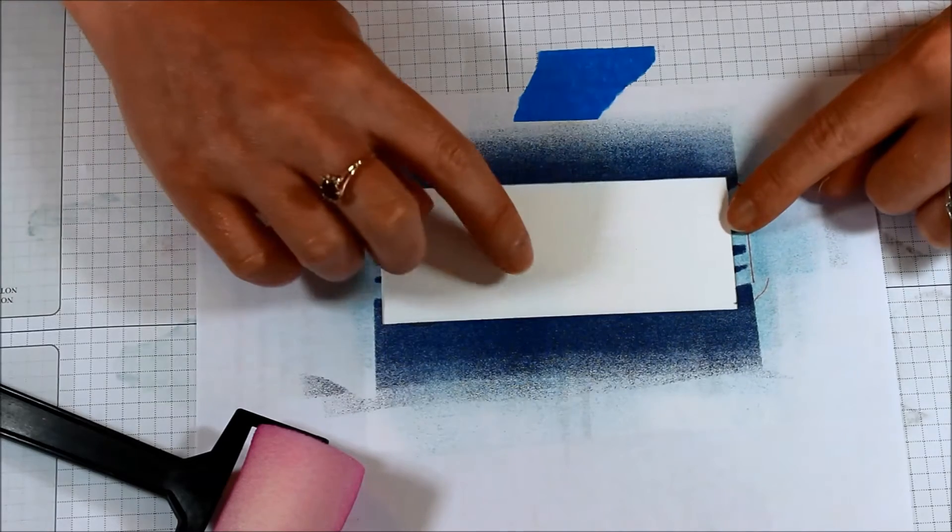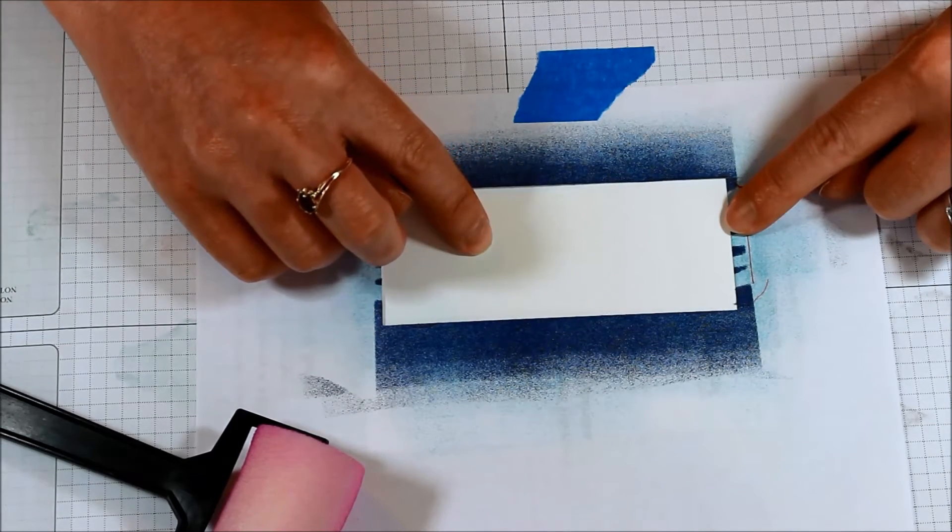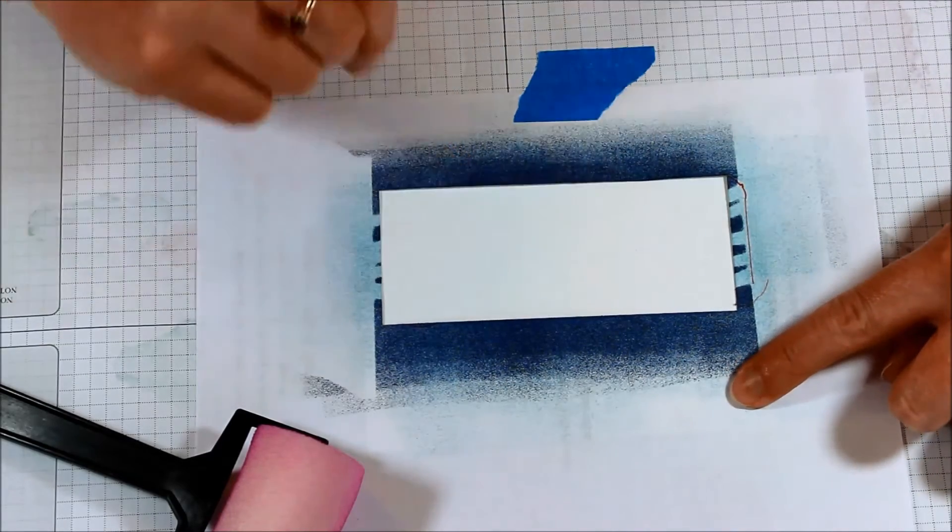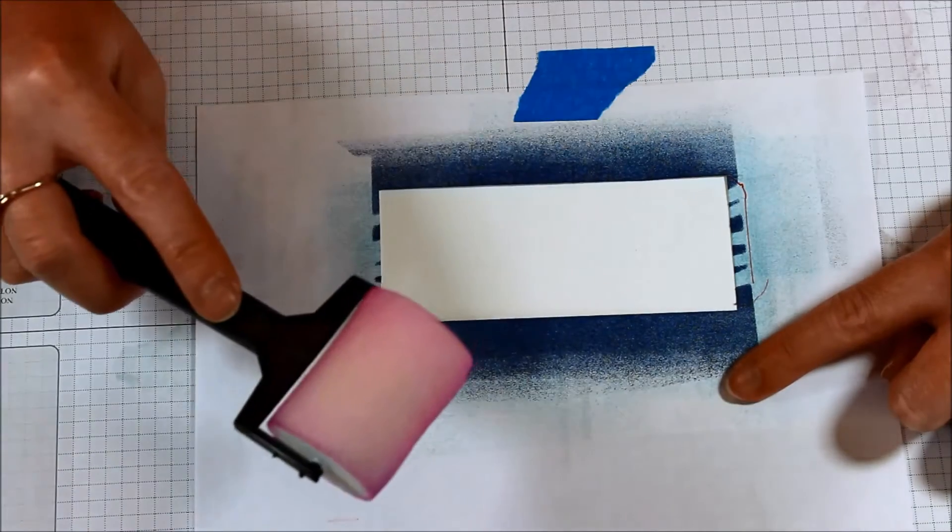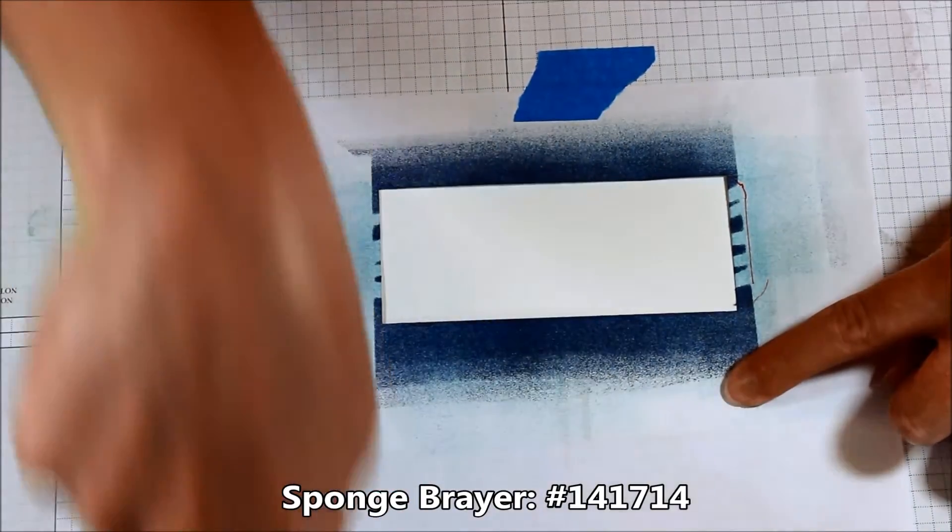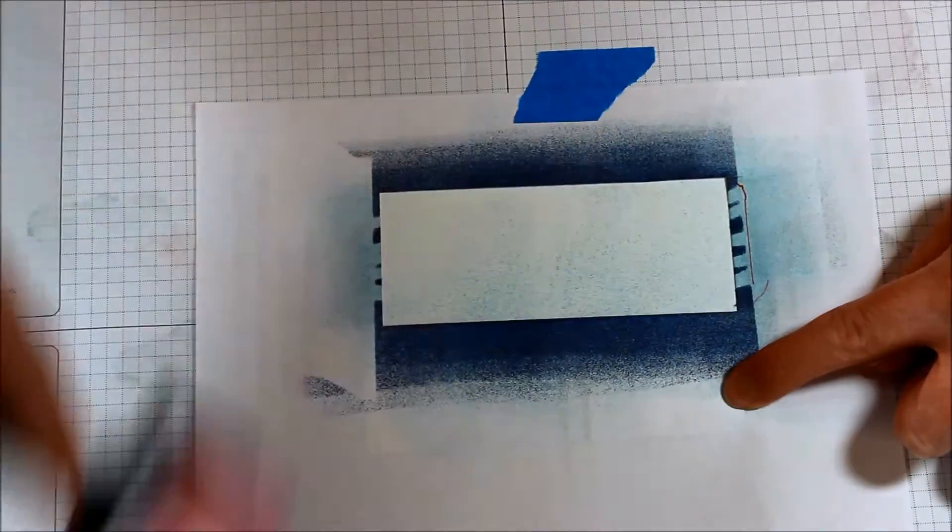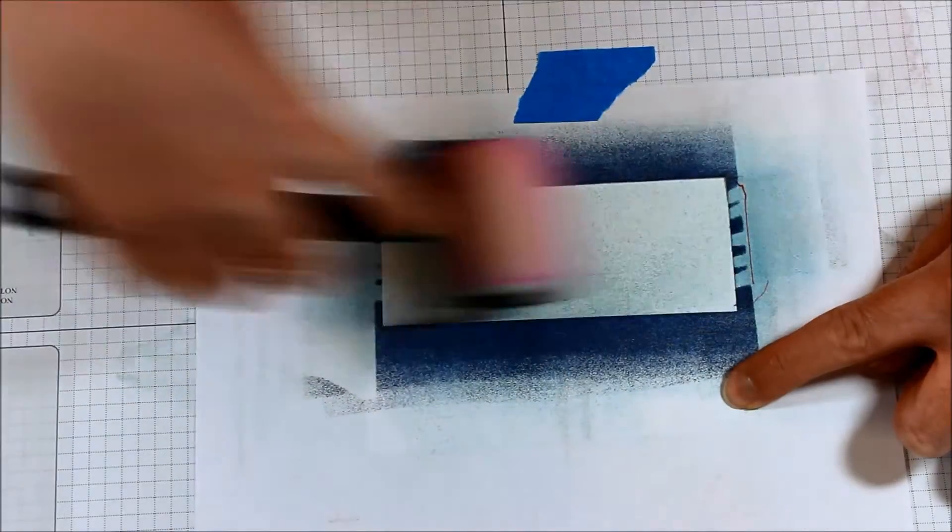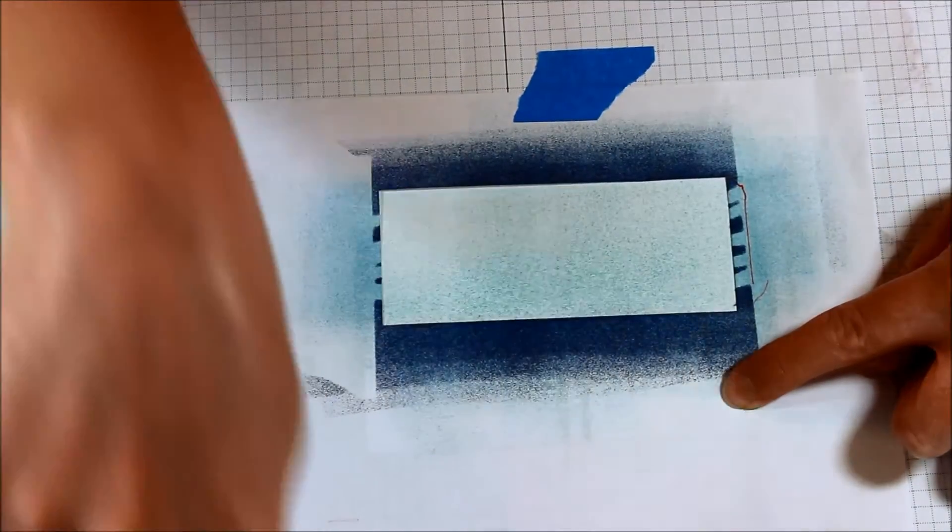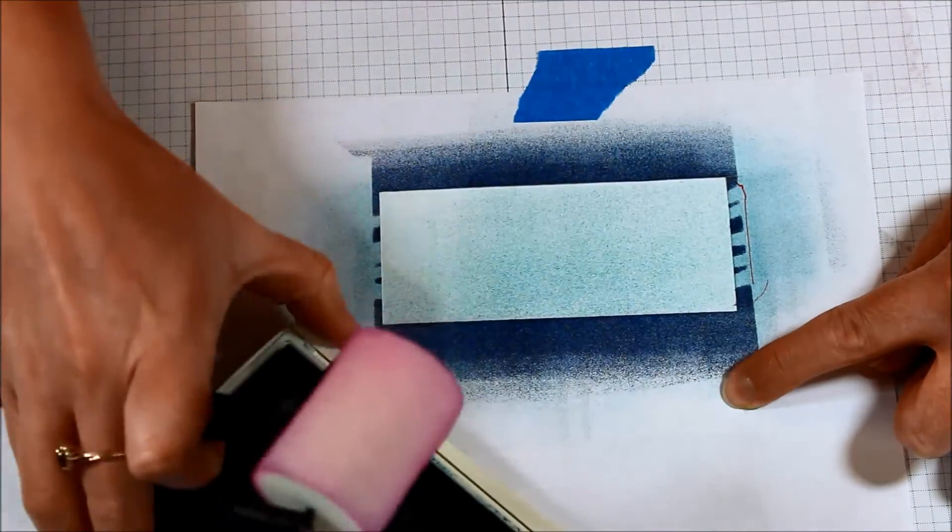You will also want to add a little dab of adhesive to the back side of where your cardstock is to make sure that it holds on tight and doesn't move on you while you're sponge brayering. So the first color I'm going to lay down is Marina Mist. I'm just going to sponge over this whole thing in Marina Mist and of course if you want it to be darker then just keep rolling. Let me bring in the ink pad real quick.